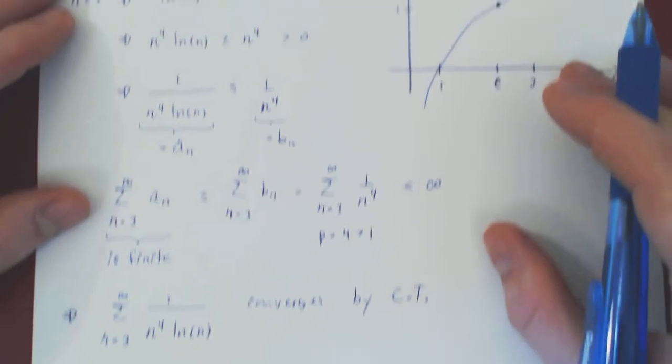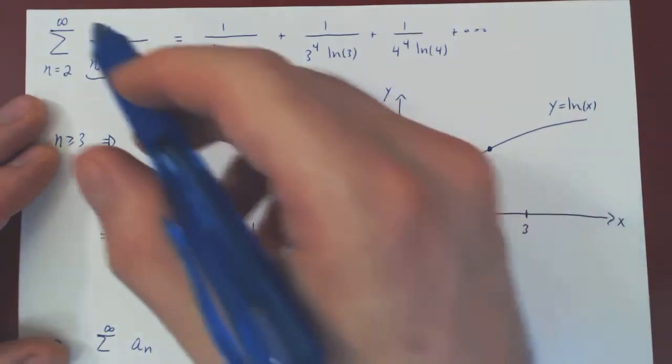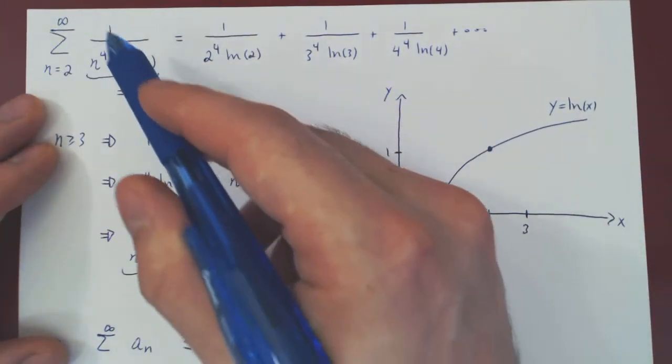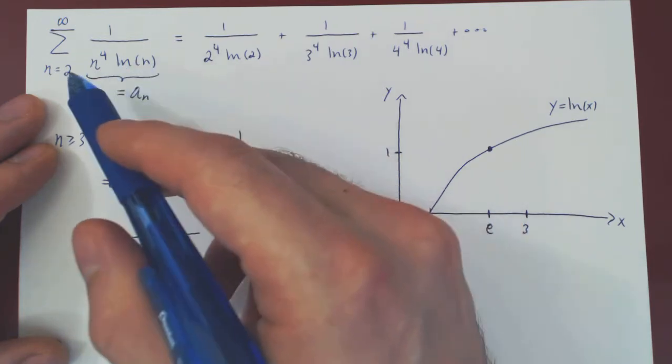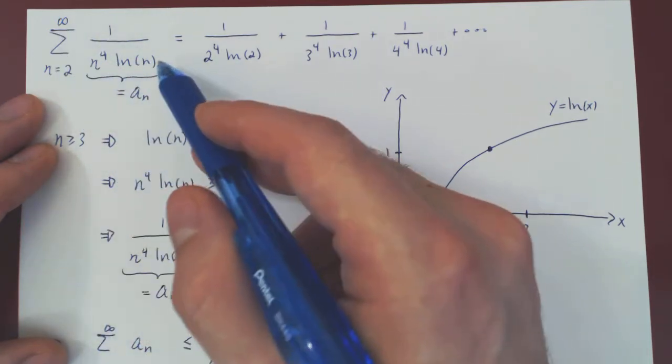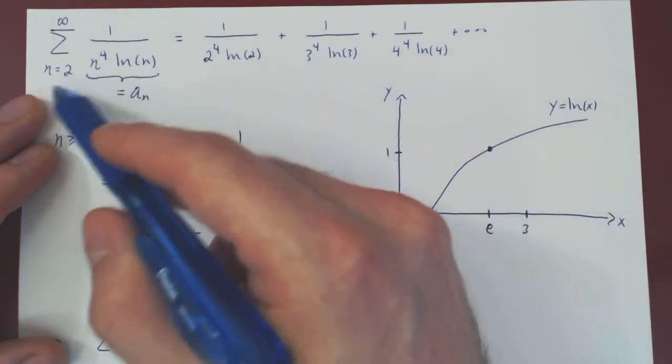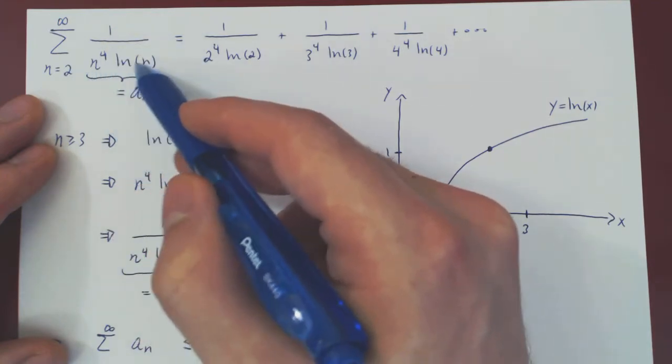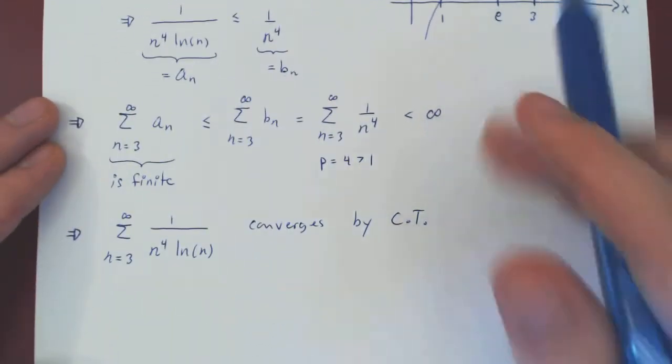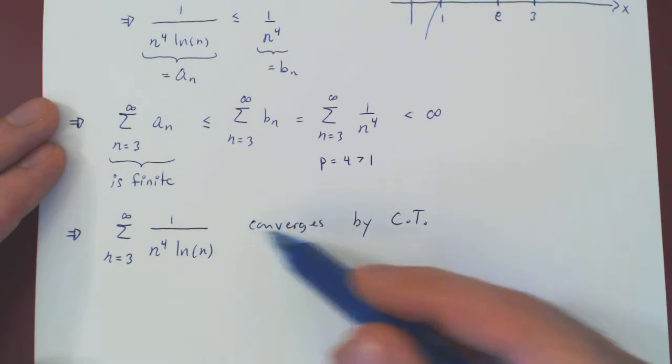What did we want to show, or at least determine? Whether the series of 1 over n to the 4 ln of n, from 2 to infinity, converges or diverges. But now we have proved that the series of 1 over n to the 4 ln of n, not from 2, but from 3 to infinity, converges.